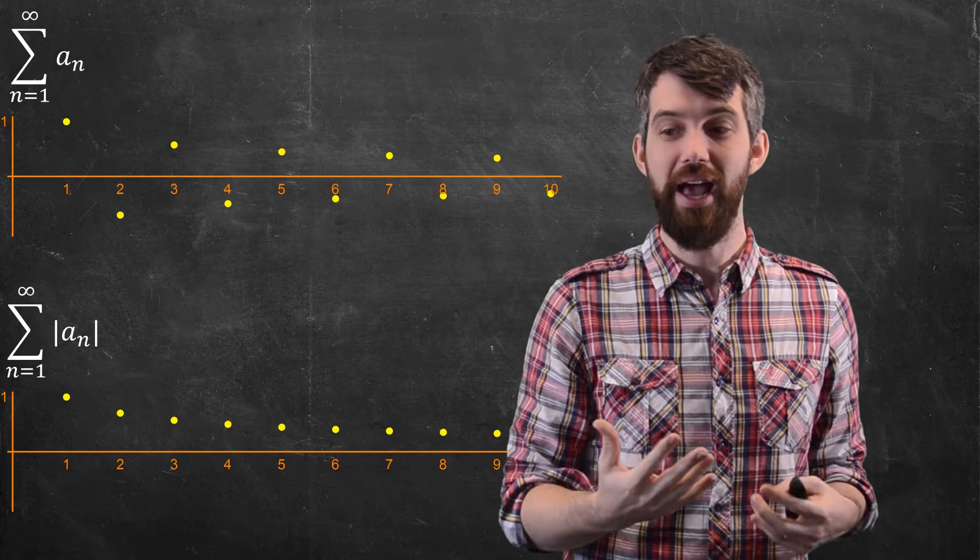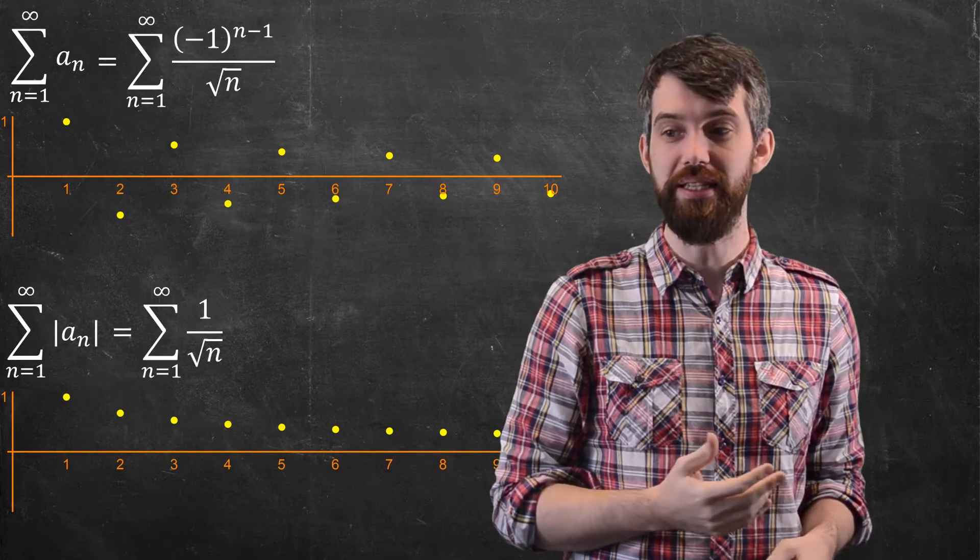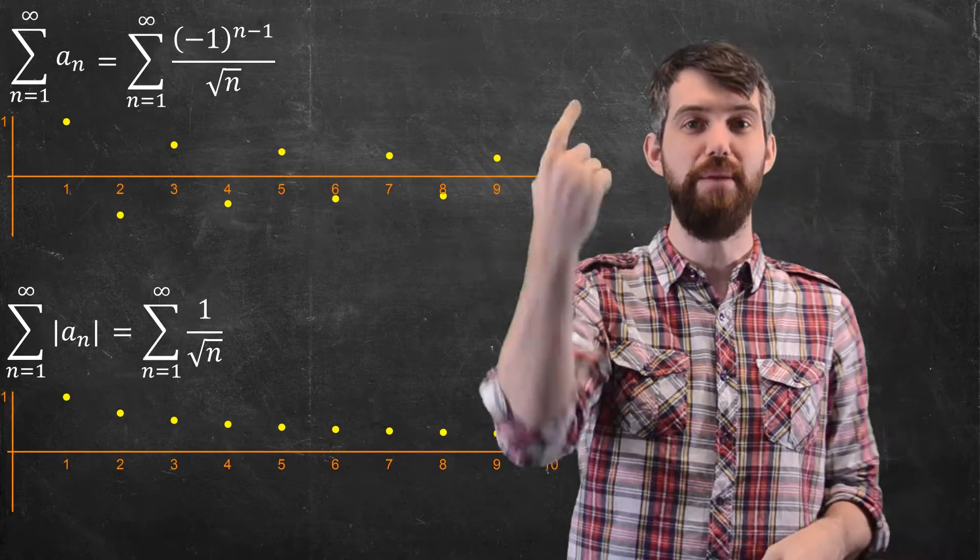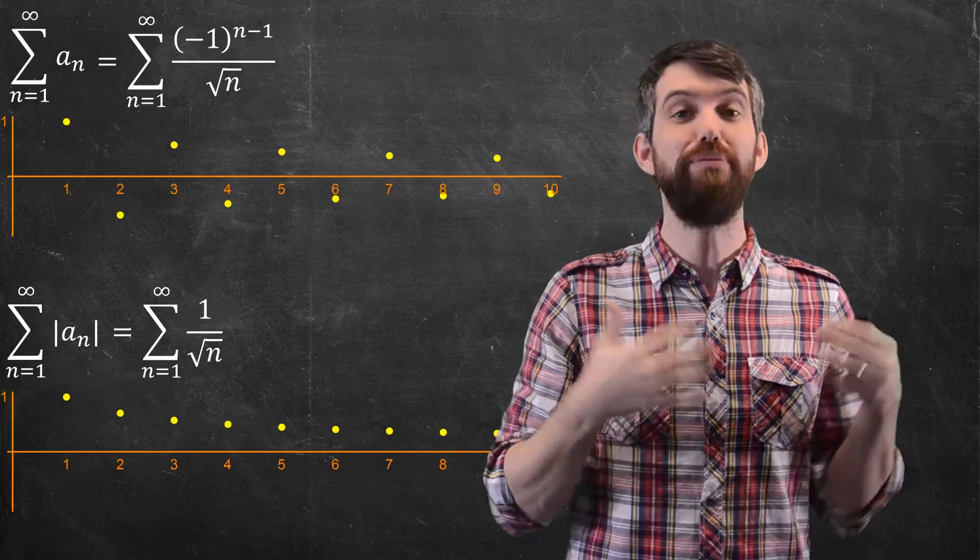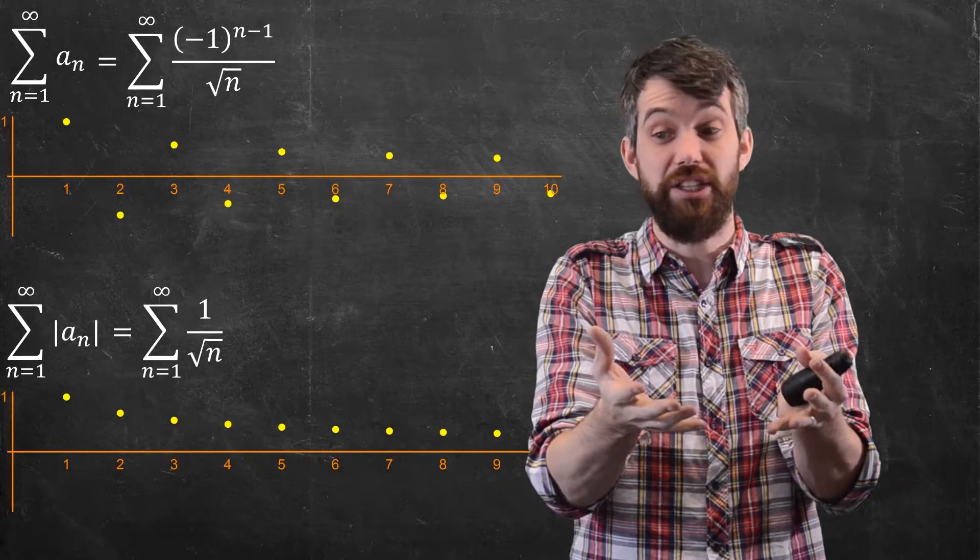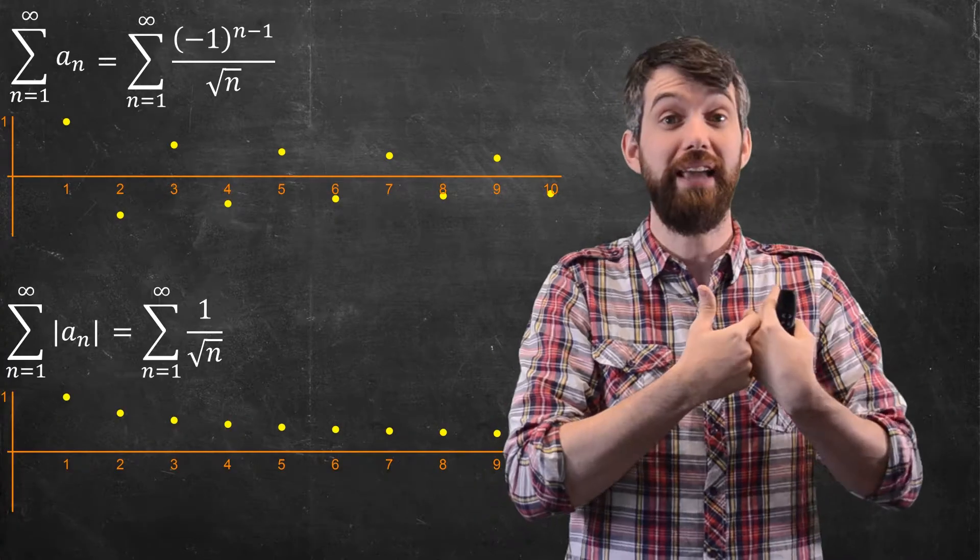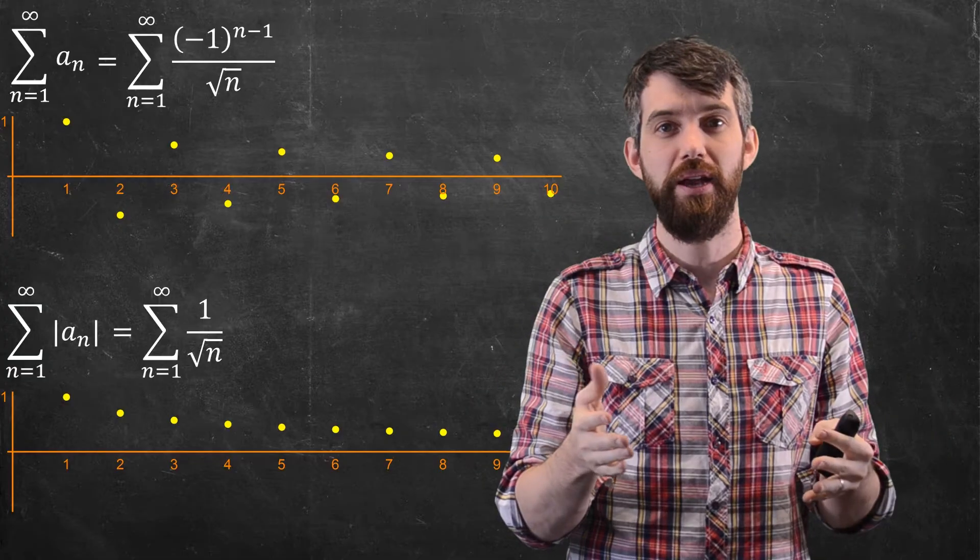Because I programmed this in, I happen to know what this series is. This is the series minus 1 to the n minus 1 all divided by square root of n. So the absolute value, the effect it has, is it just takes all of that minus 1 stuff and gets rid of it. It just all turns it into plus 1.